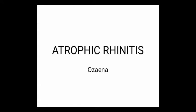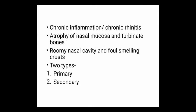In this video we are going to study about atrophic rhinitis, also called as ozena or dry rhinitis. It is chronic inflammation of the nose with atrophy of nasal mucosa and turbinate bones. Nasal cavity is roomy with foul smelling crust. It is of two types: primary and secondary.